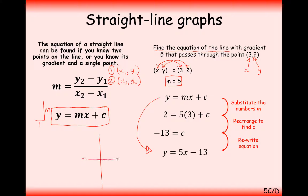Just a little recap: this graph is going to start down at minus 13, and for every one value we go across, we go up by 5. So the next coordinate is (1, −8), then (2, −3), and then (3, 2), just like stated in the question.